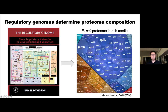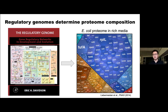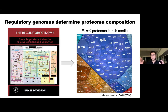Rather, it's much more graded levels of protein production that span many orders of magnitude. For example, this is an E. coli proteome in rich media, where the size of each polygon corresponds to the abundance of each protein. Just think about how complex this problem is for the regulatory genome to tune these 4,000 knobs of protein expression across all these different scales.